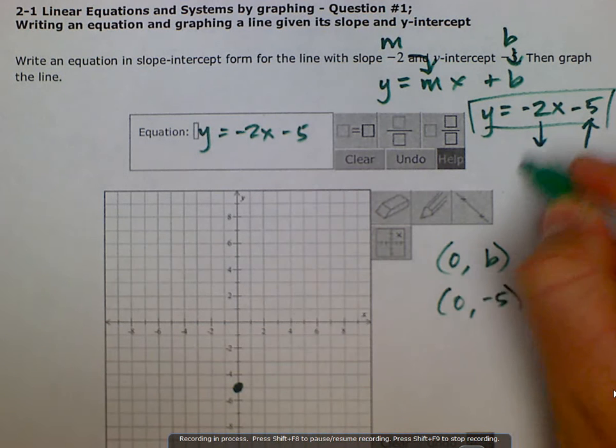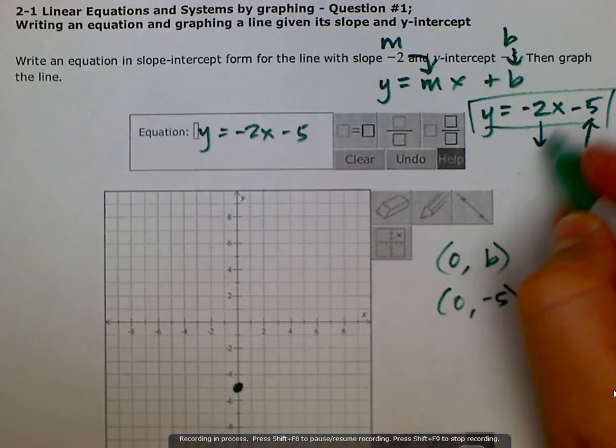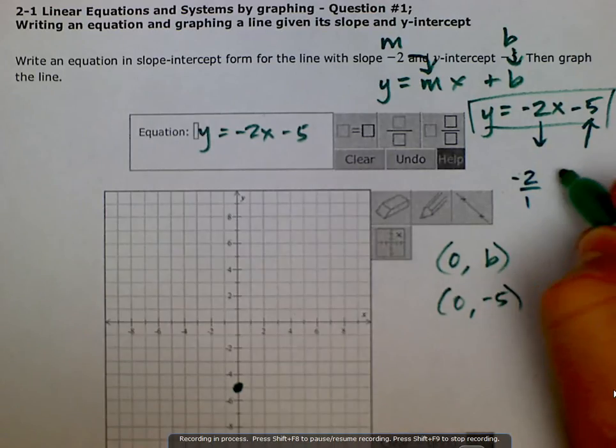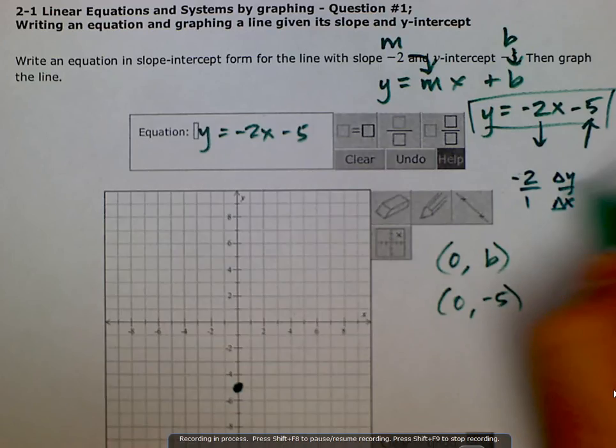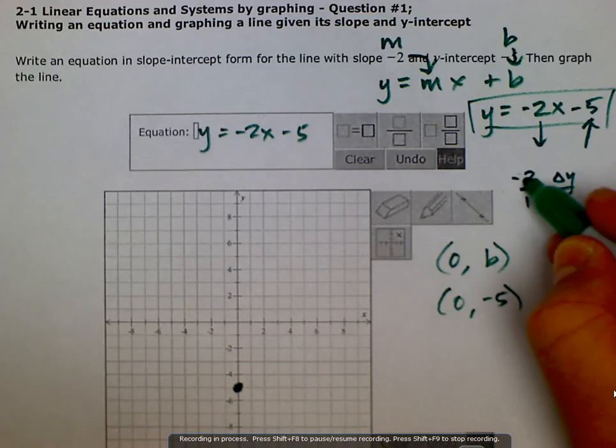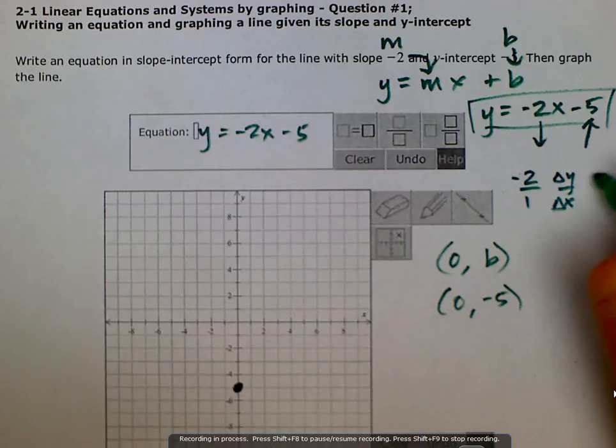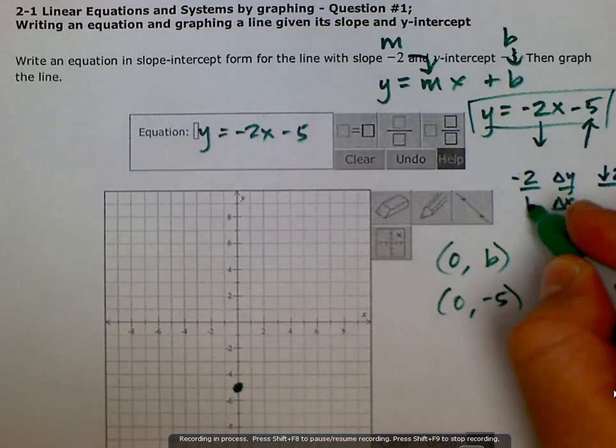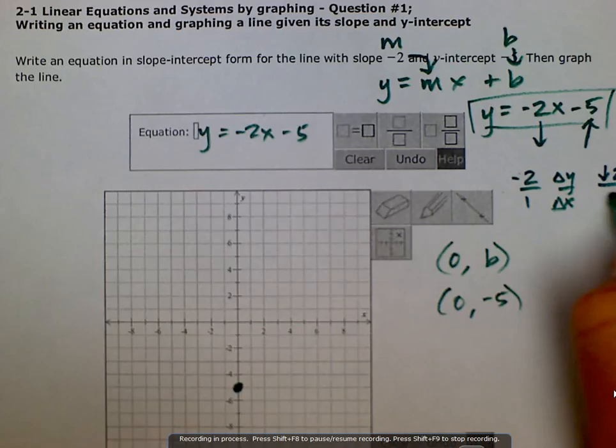Negative 2 can be represented as a fraction -2 over 1, which gives us the directions. It's change in y over change in x, which says change 2 in the negative vertical direction, so down 2, and then change 1 in the positive x-direction, so to the right 1.